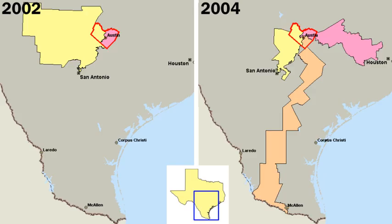The United States Constitution does not mention political parties, primarily because the Founding Fathers did not intend for American politics to be partisan. In Federalist Papers No. 9 and No. 10, Alexander Hamilton and James Madison, respectively, wrote specifically about the dangers of domestic political factions. In addition, the first President of the United States, George Washington, was not a member of any political party at the time of his election or during his tenure as President.